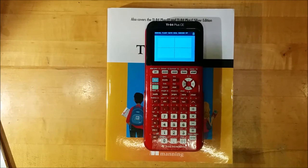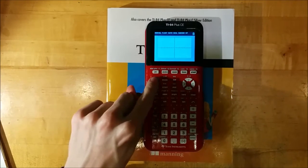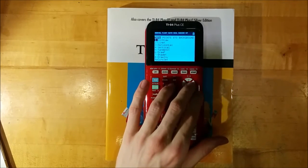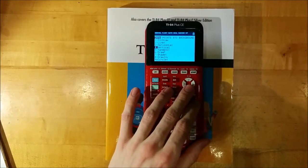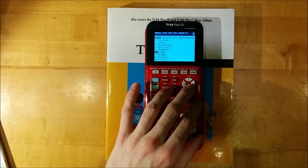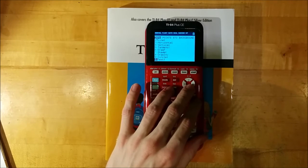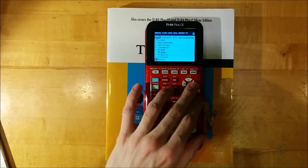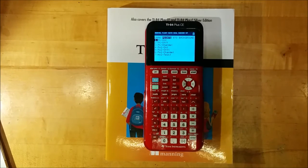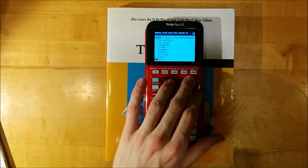In order to draw on the graph screen, we can use the tools that are found in second program, which is the draw menu. We can do things like clear the screen, draw lines, draw horizontal and vertical lines, draw a tangent to a curve or to a line, draw a function, shade an area, draw circles, and even draw text. We can also turn points and pixels on the graph screen on and off. These are especially useful if you're writing a program and you want to either mark up a graph or even create a game on the graph screen.